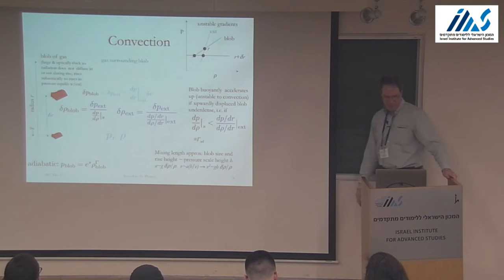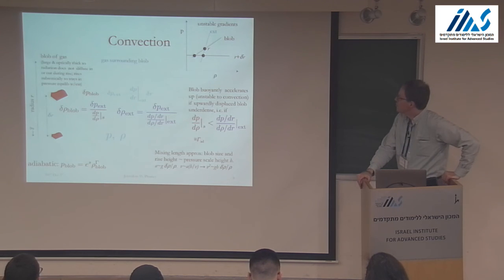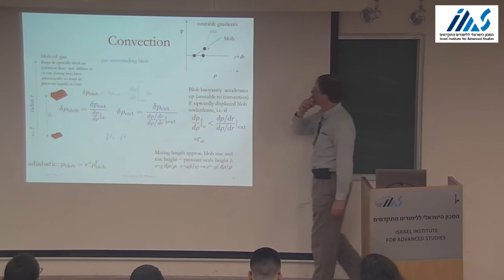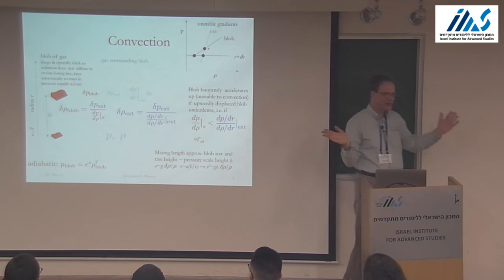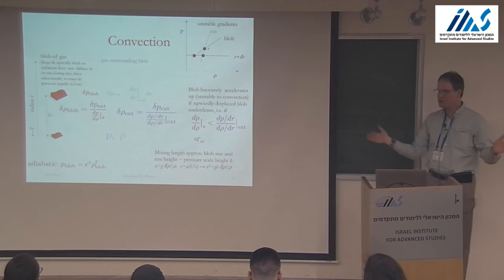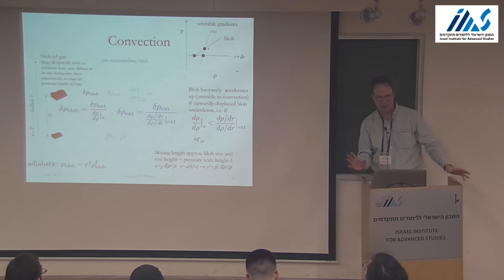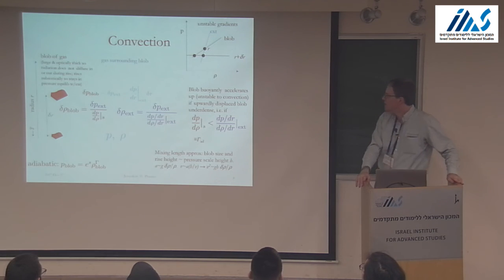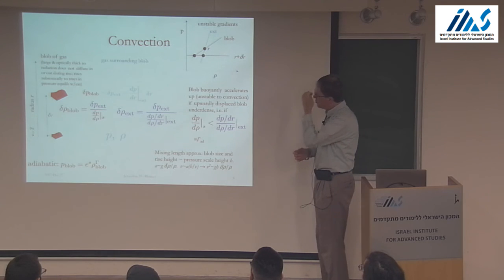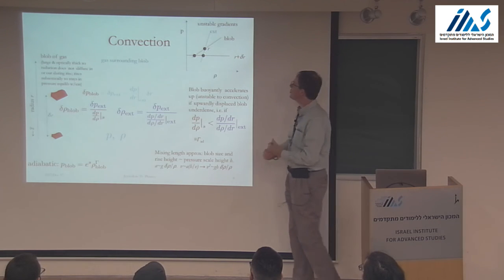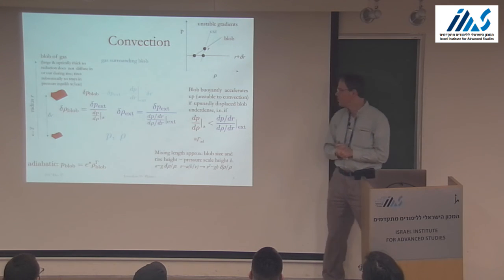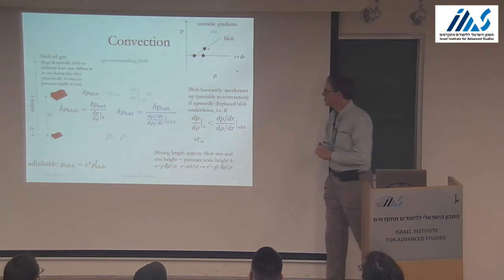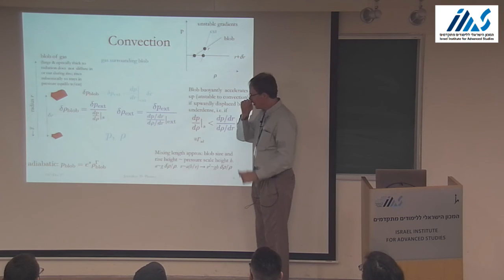Now, the nastiest and perhaps most important part of stellar structure is convection. If everything were just radiation equilibrium, it would all be beautiful fundamental physics — you could just measure opacities, calculate them, and calculate the structure of the stars. But unfortunately, it happens quite often that the temperature gradient you find, if you want to carry the heat just by radiation, turns out to be an unstable temperature gradient.